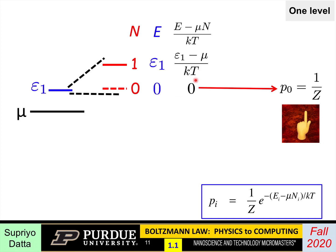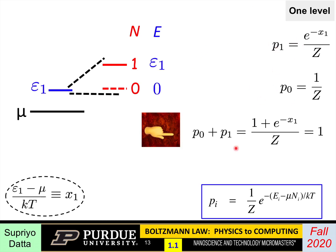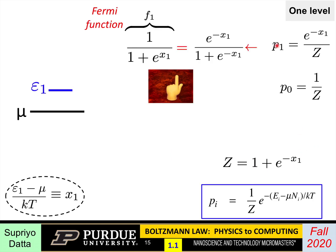The probability of the zero state is one over Z, because e to the power zero is one. The probability of the one state is e to the power minus x_1 over Z, where x_1 is defined as (epsilon_1 minus mu) over kT. To find Z, the two probabilities must add up to one, so p_0 plus p_1 gives (one plus e to the power minus x_1) divided by Z equal to one, which tells us Z equals one plus e to the power minus x_1.